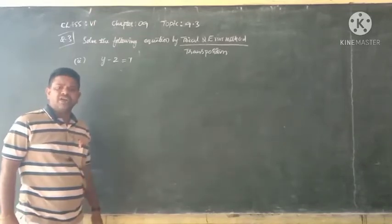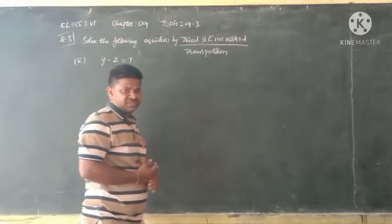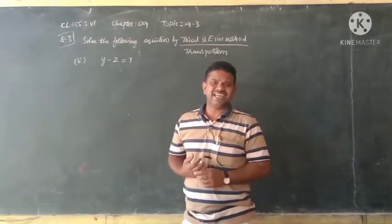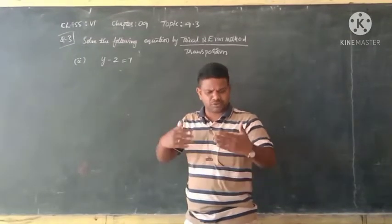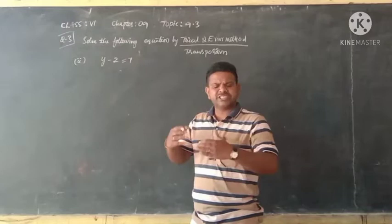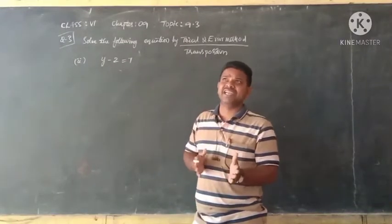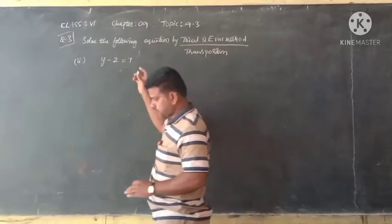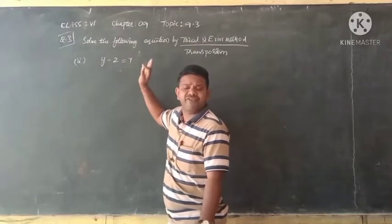We are going to find the solution of this equation using trial and error. In this method, we check one by one by taking a particular value for the variable and substituting that value in the equation. We check whether LHS and RHS become equal. If they are equal, that value is the solution of the equation.